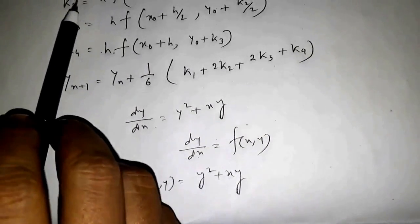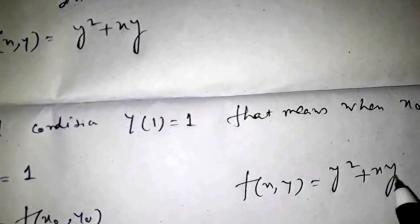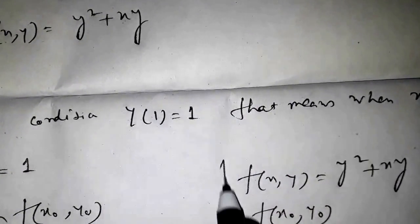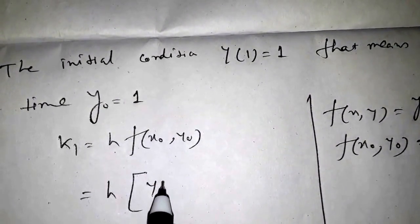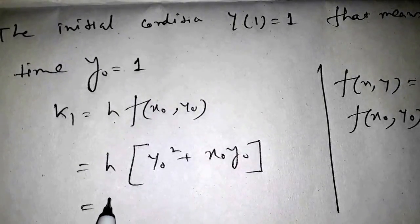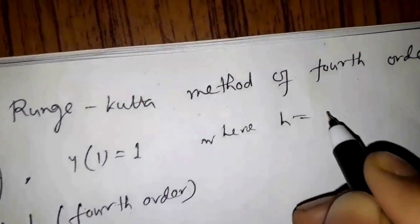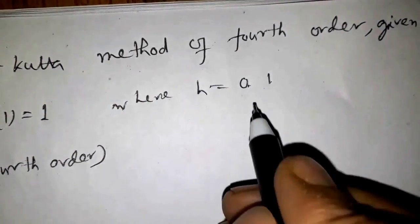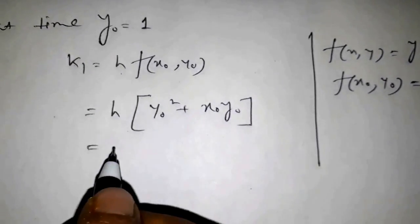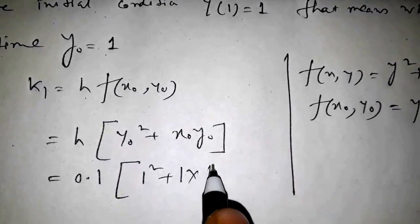Now we find k1. k1 = h·f(x₀, y₀). We know f(x, y) = y² + xy, so f(x₀, y₀) = y₀² + x₀·y₀. Therefore k1 = h·(y₀² + x₀·y₀). Here h = 0.1, y₀ = 1, x₀ = 1, so k1 = 0.1·(1² + 1·1) = 0.2.